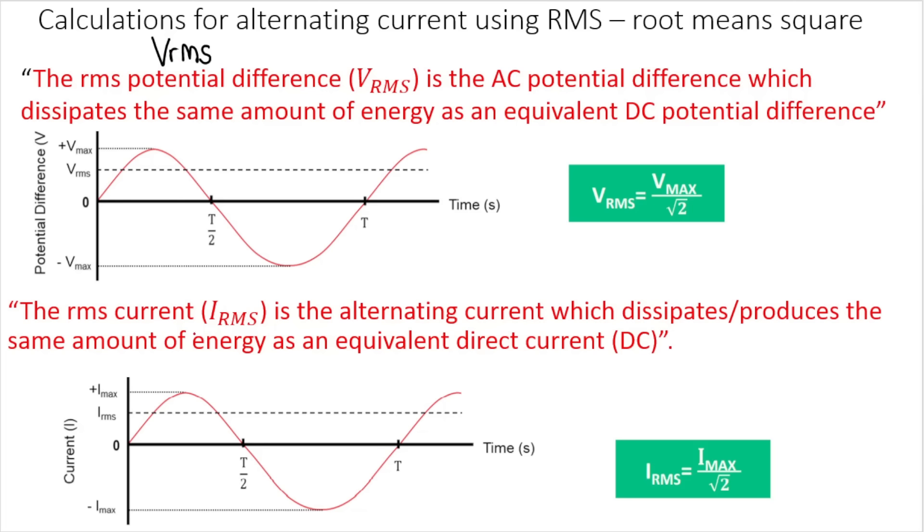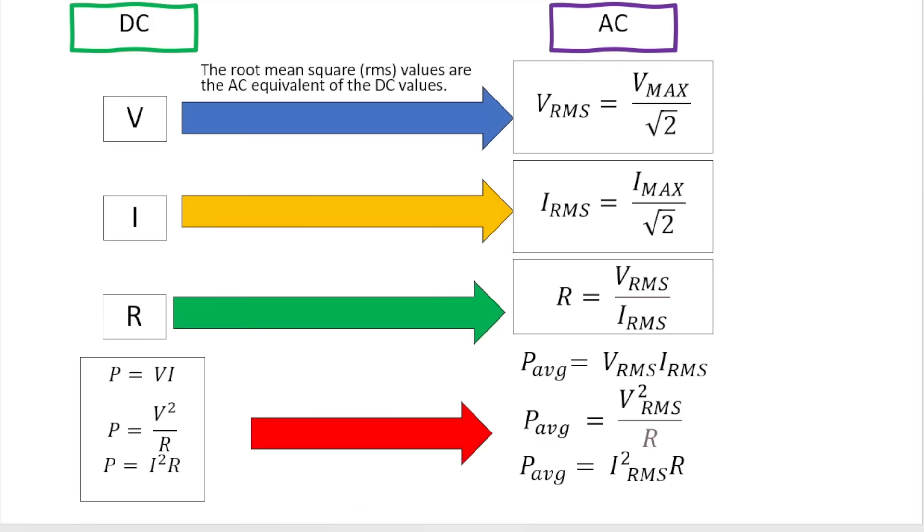Now, what you see in red, those are the official definitions that you need to know for VRMS and IRMS. V voltage RMS and RMS current. And as you can see, they say the RMS voltage or potential difference is the AC potential difference. It only applies to AC circuits, not DC. So it's the AC potential difference, which dissipates the same amount of energy as an equivalent DC potential difference. So basically, when we deal with normal circuits, normal DC circuits, this is stuff that we've been doing since grade 10. We make use of these formulae. So we work out potential difference. We work out current. Now, when working with an AC circuit, we need a DC equivalent. And the root mean square values are basically an equivalent of the DC values.